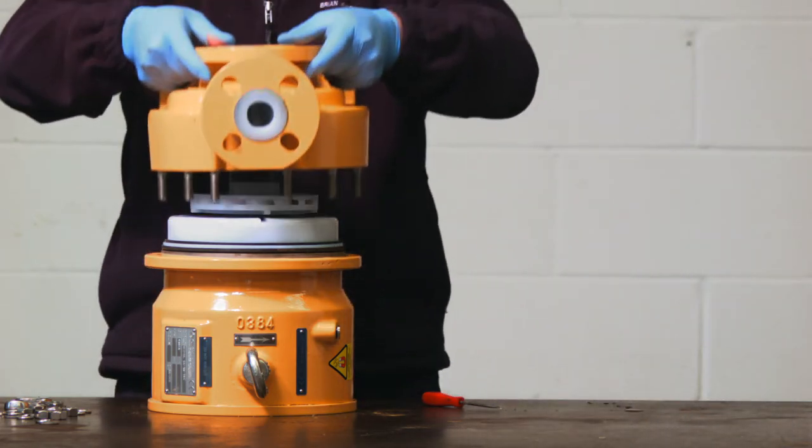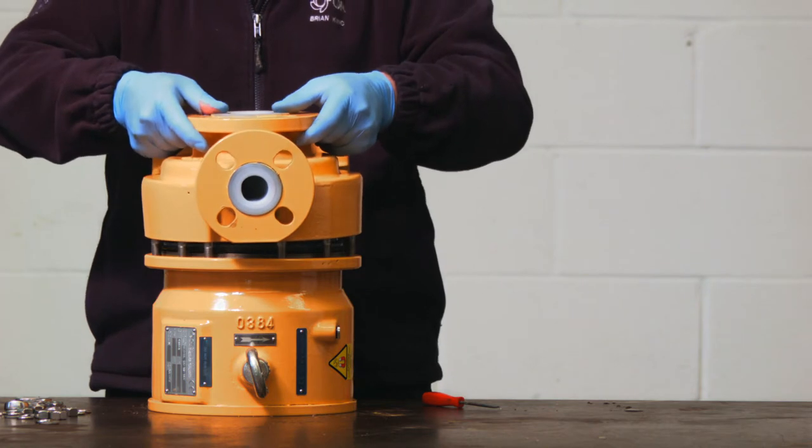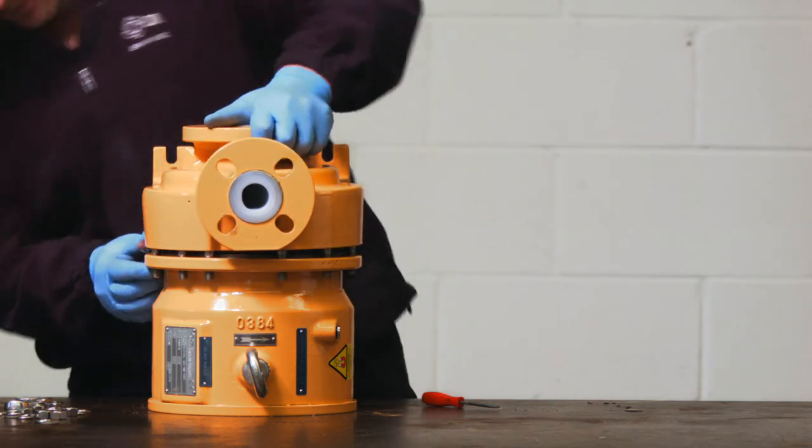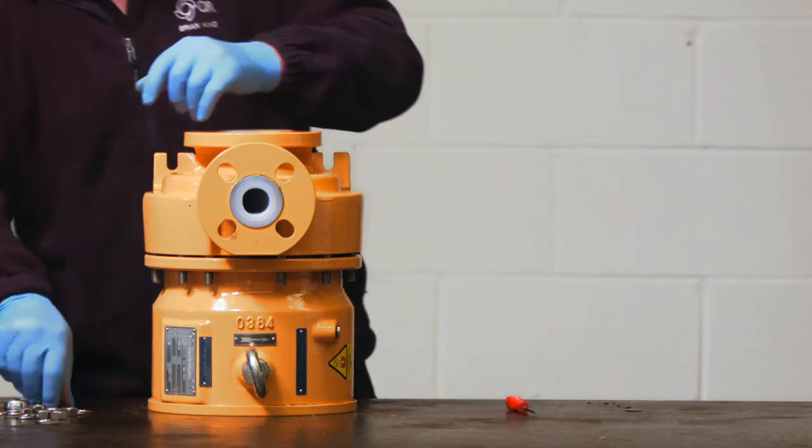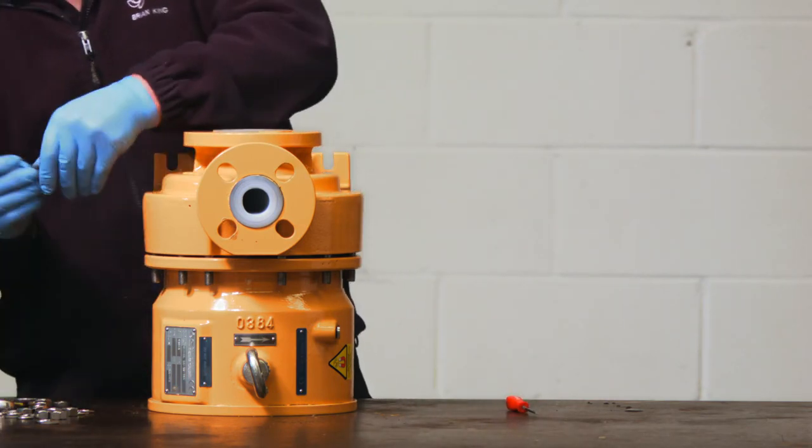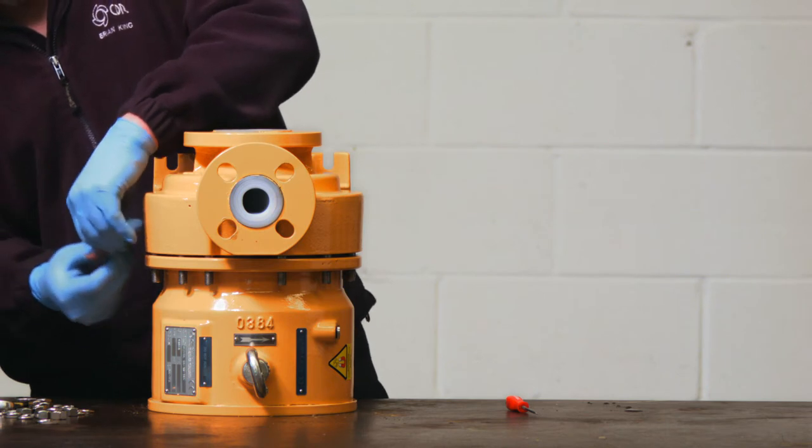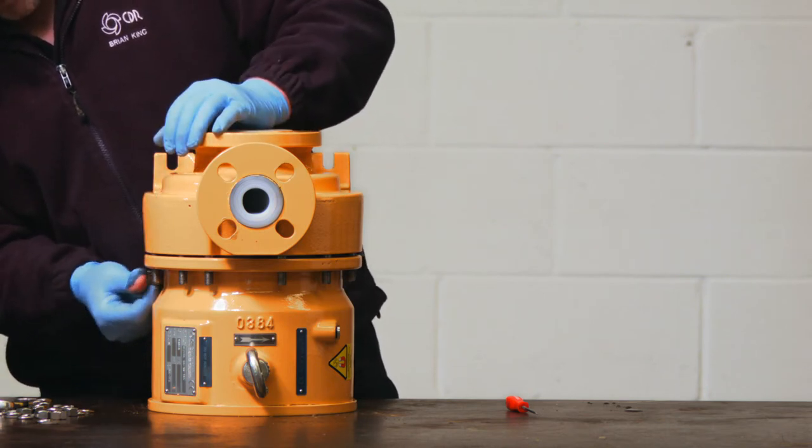The casing is then lifted into place ensuring the o-ring is placed correctly. We advise replacing the o-ring during any repair or service. And then it's a case of replacing all the nuts or washers.